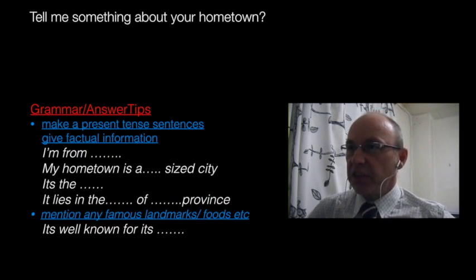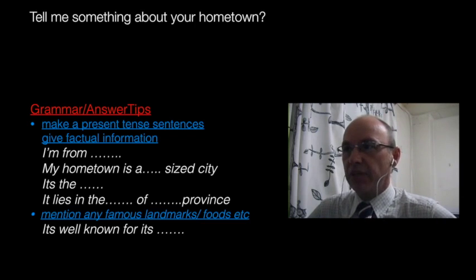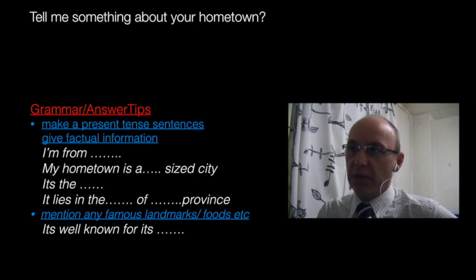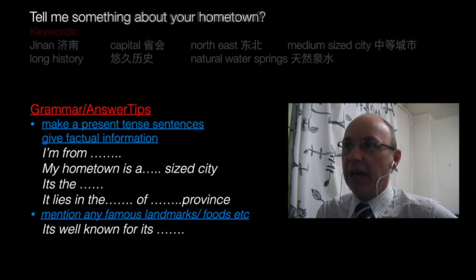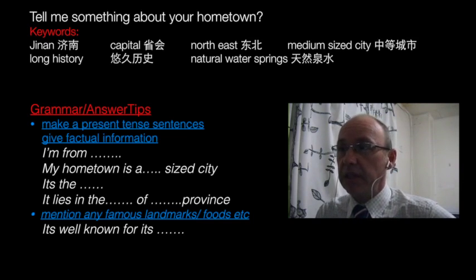The first question is: Tell me something about your hometown. This is the most common question every student gets asked at the beginning of the IELTS test, so it's quite easy to make a good impression here. First, use the present tense — make present tense sentences and give factual information about your hometown: where you're from, the size of your city — whether it's a medium or small sized city — and where it is and what province it's in. You can say it's in the north or south. Then mention something your hometown is famous for.